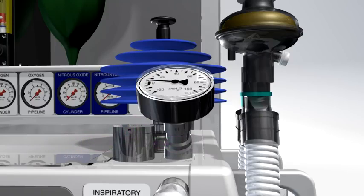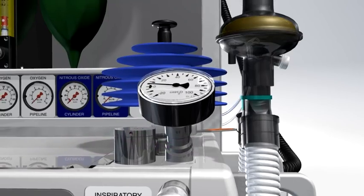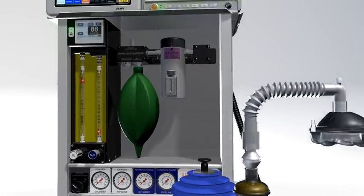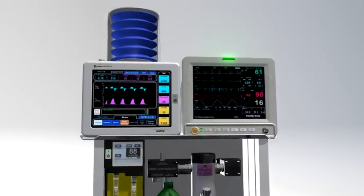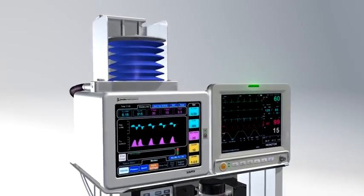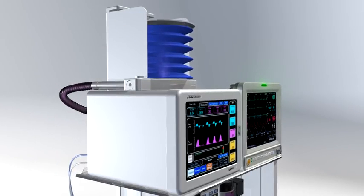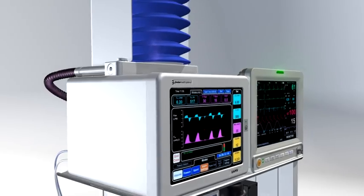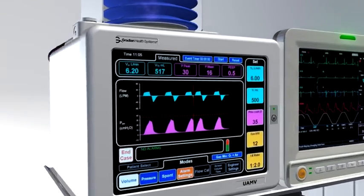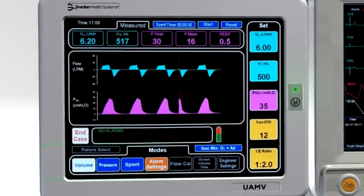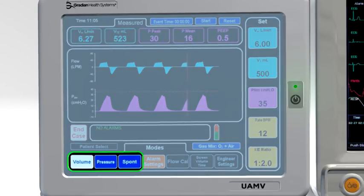The optional ventilator provides automatic IPPV. It is electrically driven and does not require compressed gas. Internal batteries provide up to 6 hours of backup operation. The UAM ventilator operates in volume control and pressure control modes. During spontaneous breathing and manual IPPV, it will display pressure and flow readings.